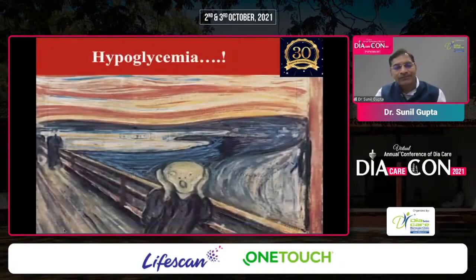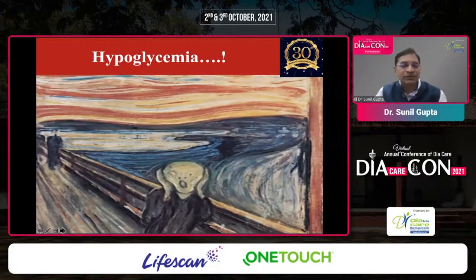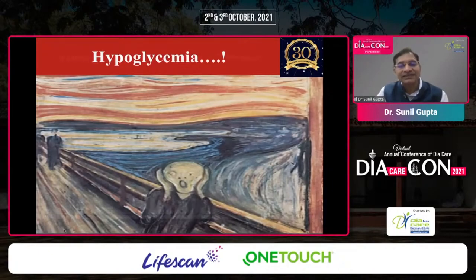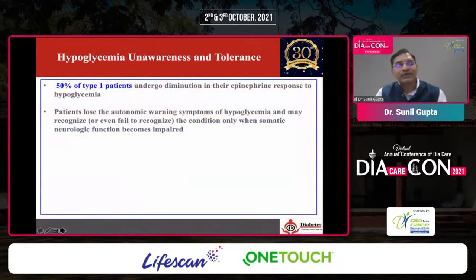But equally important is hypoglycemia. Even a single episode of hypoglycemia in a person with type 1 or type 2 diabetes on insulin or oral drugs will certainly shatter their life. They develop a tremendous phobia of hypoglycemia if they have had moderate to severe hypoglycemia even once. That is why hypoglycemia needs to be addressed.